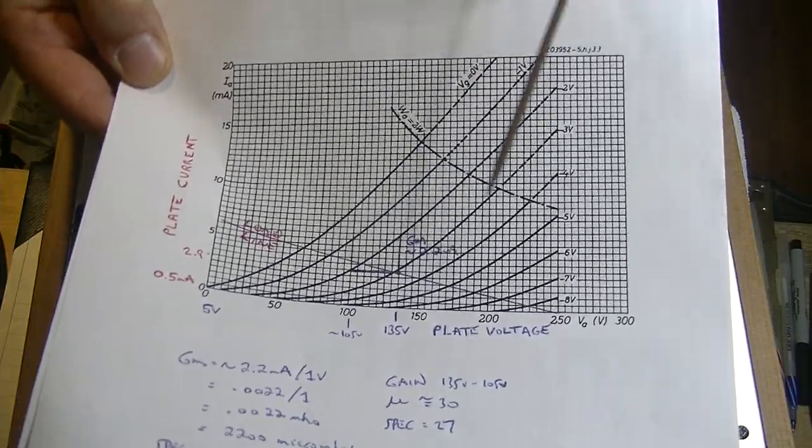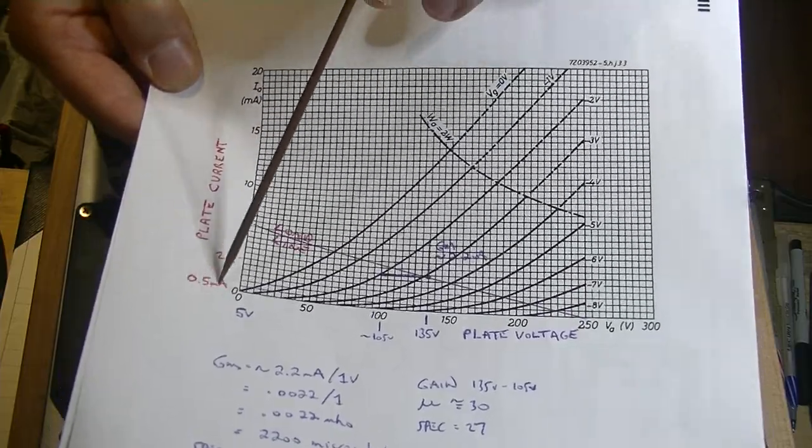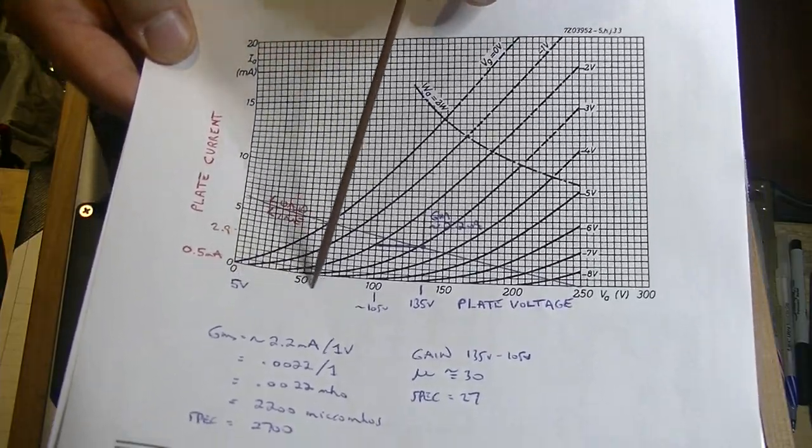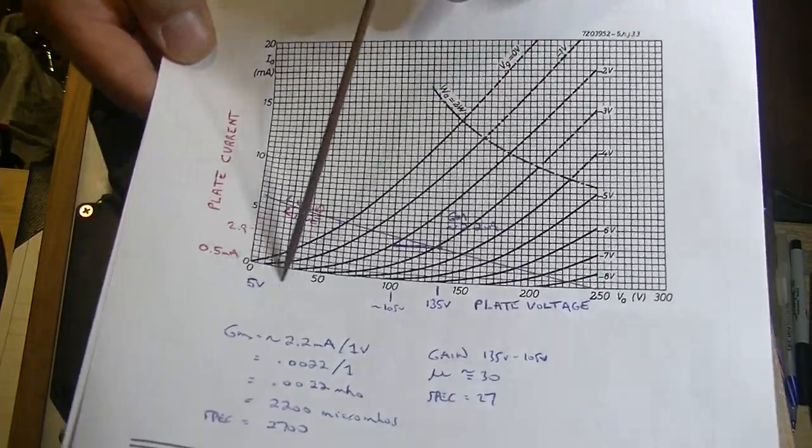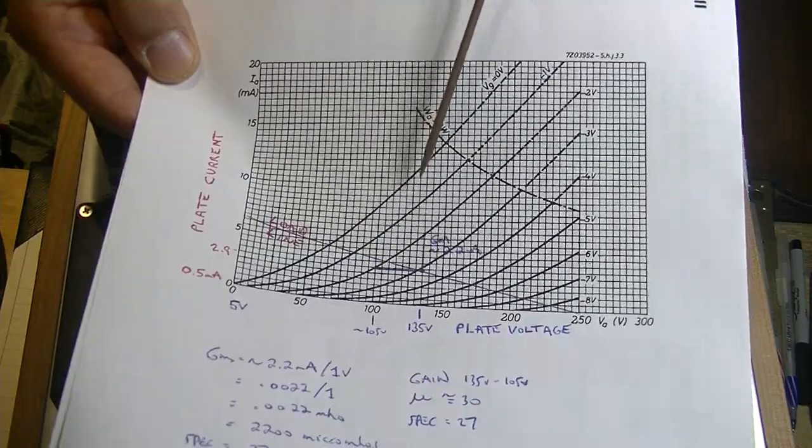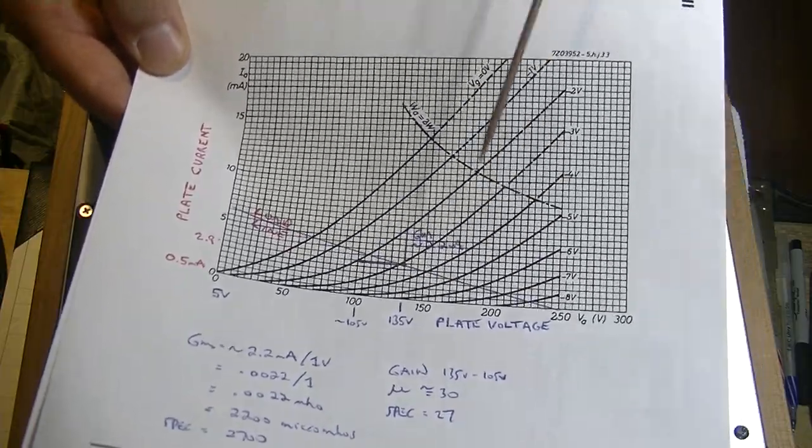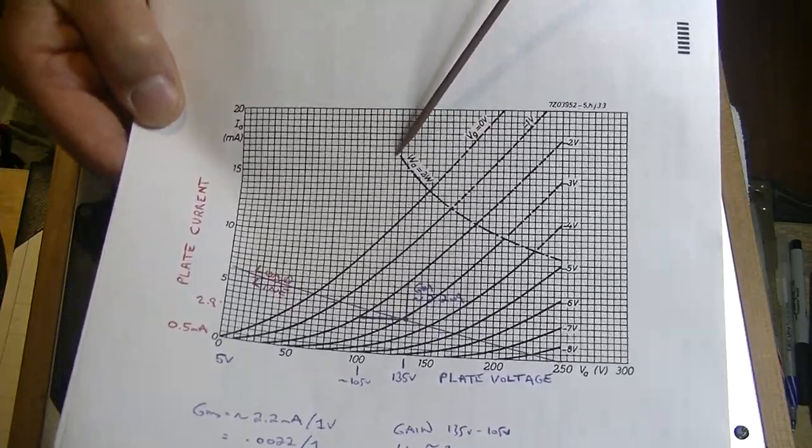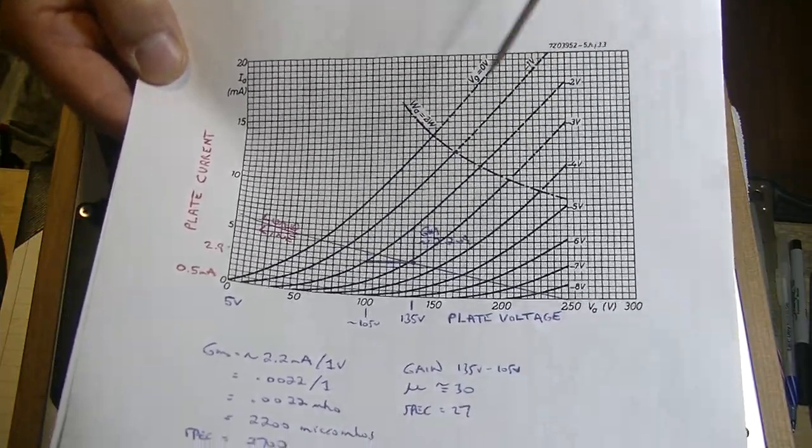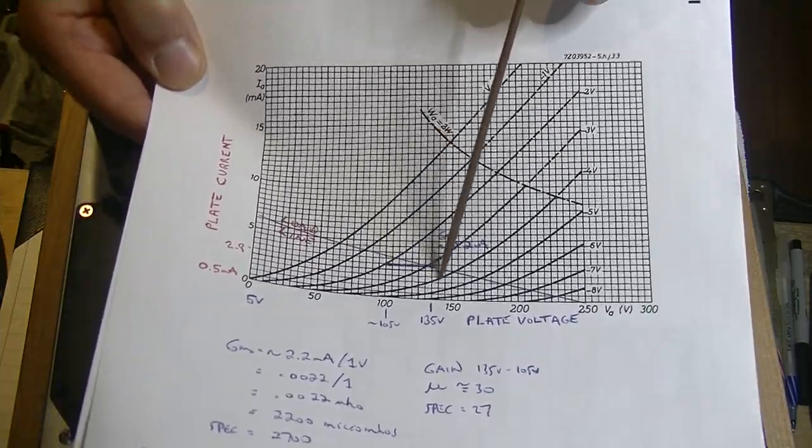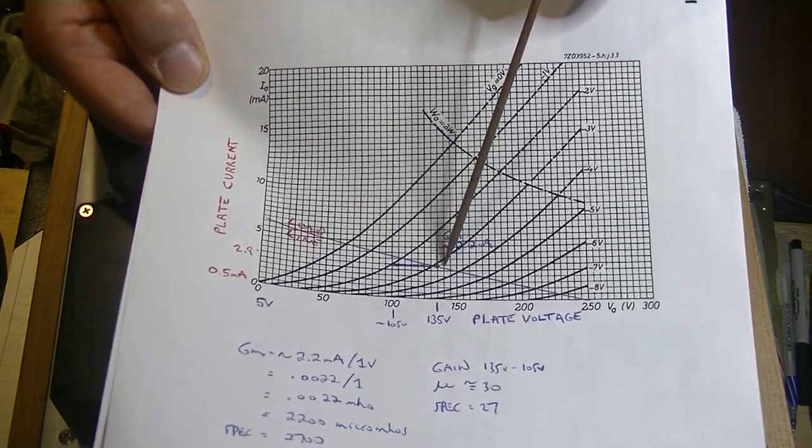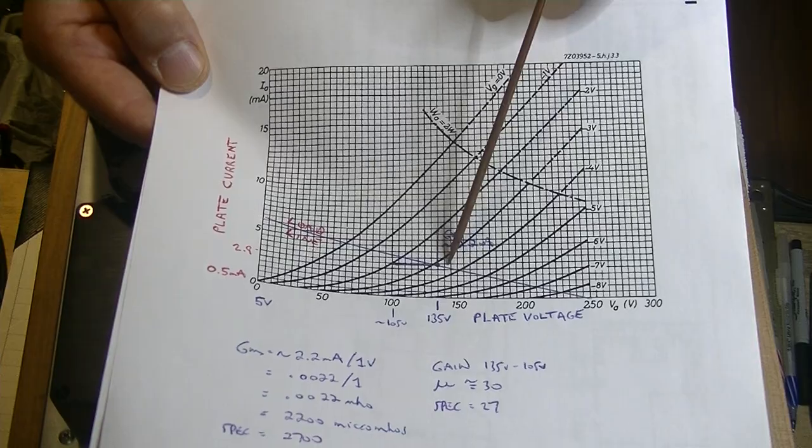So that's my center operating point, because it does swing around with the audio signal. Here we've got the milliamps, the plate current. Here we've got the voltage of the plate. Here we've got the grid lines, all the operating points of the tube. Two watts up here is the maximum plate dissipation. And here is the load line. This little red dot here, that's our operating point.